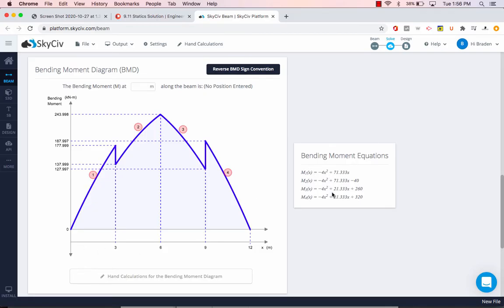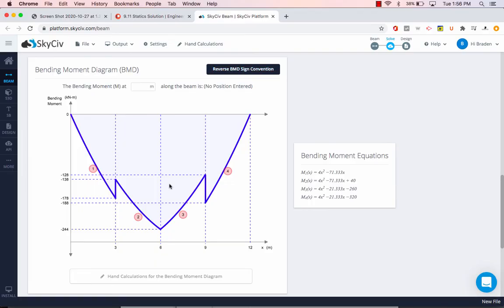Also super nice to have because solving those, usually when I solve these by hand I don't bother. I just find the points of interest and connect them with straight lines or parabolas depending on the type of loading. But this is pretty nice to have as well considering how fast it is to get. You can even come here and switch the bending moment diagram sign convention if you're used to drawing it inverted, just a nice feature as well.